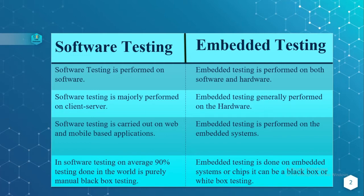Software testing is carried out on web and mobile-based applications, whereas embedded testing is performed on embedded systems. In software testing, an average of 90 percent of testing done in the world is purely manual black-box testing.